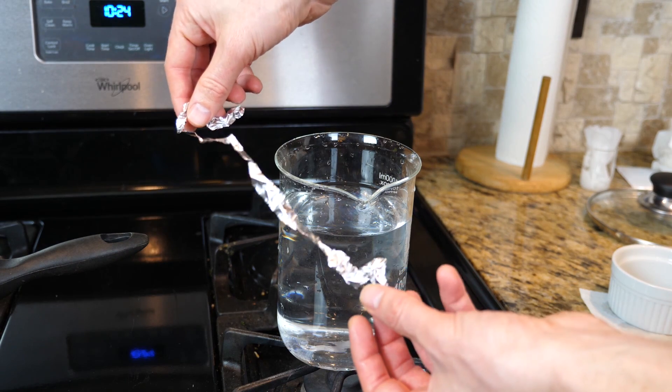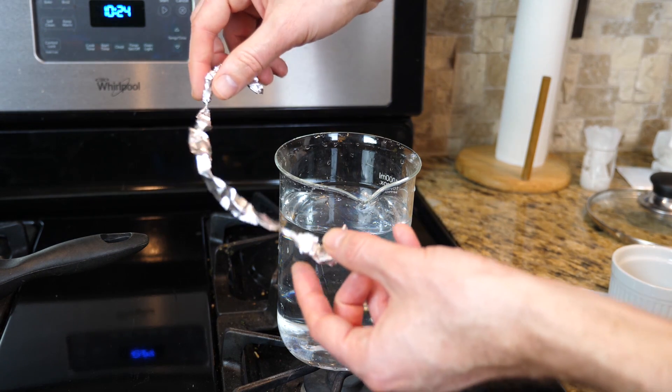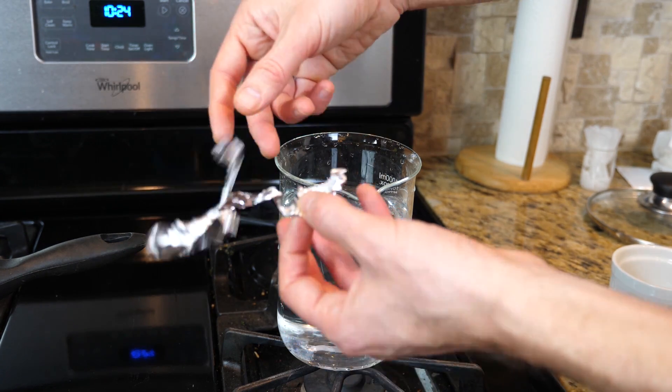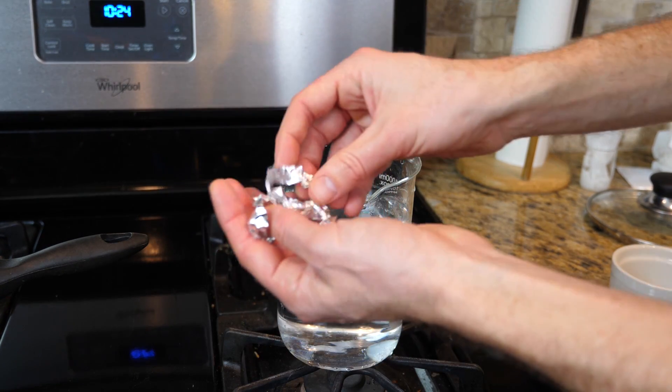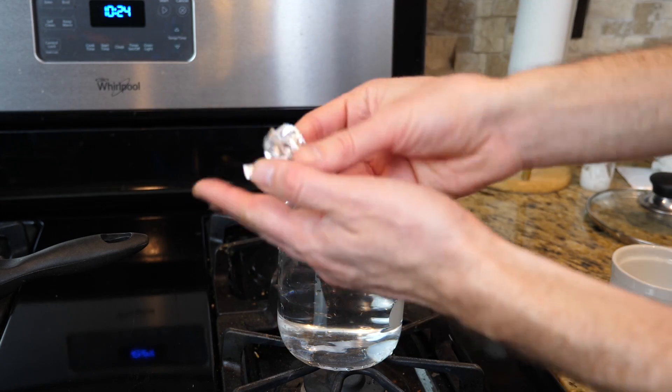So before I dilute it, they're just strings floating around. And then when I dilute it, the urea is not holding them apart anymore. And there's enough water around it that they spontaneously fold back together into their little clumps again.